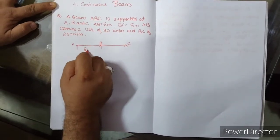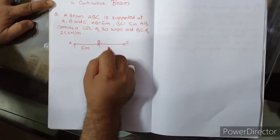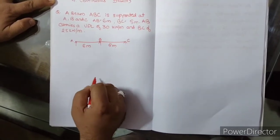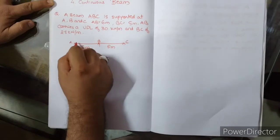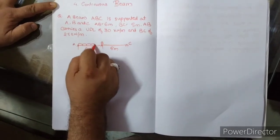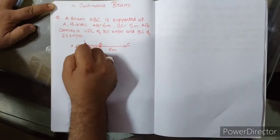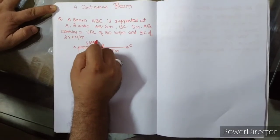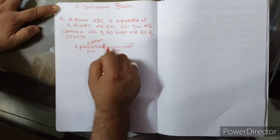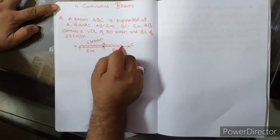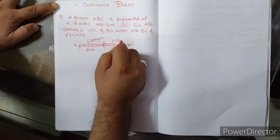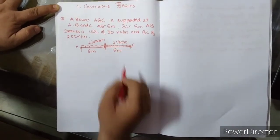AB कितना दिया है? 6 meter. BC 5 meter. AB पे कितना load है? UDL दिया है 30 kilonewton per meter, और BC पे 25 kilonewton per meter का.